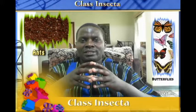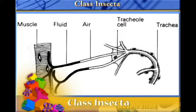In the process of breathing, they have tubes called tracheae, and they use this tracheal system for breathing in oxygen and breathing out carbon dioxide.